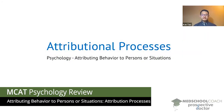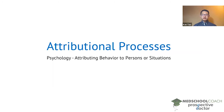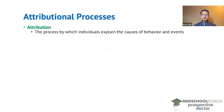In this video, we're going to discuss attributional processes, focusing on the self-serving bias and fundamental attribution error. To begin, attribution is the process by which individuals explain the causes of behavior and events. Generally, there are two types of explanations that individuals will use: internal factors and external factors.